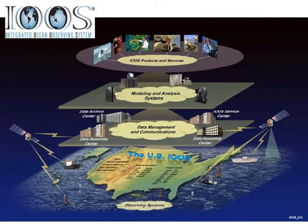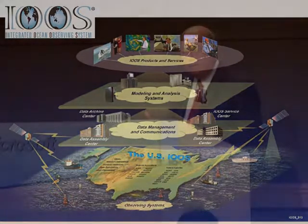Graphically, on the bottom are all the various ways of observations themselves, which are seamlessly stitched together by a data management and communication system with national consistency and regional flavor. Modeling and analysis systems ingest inherently sparse data, extended spatially and temporally with models and then putting out products. The various IUSE products and services at the end are tailored or driven by the user community itself.